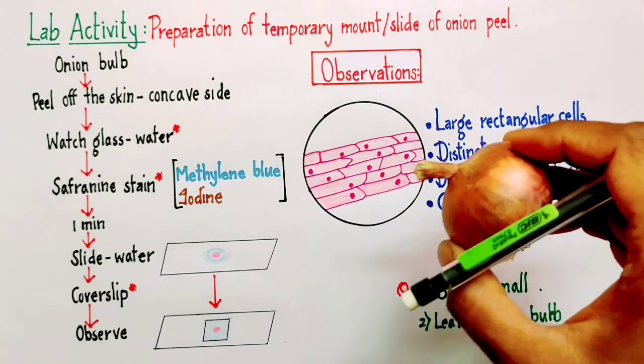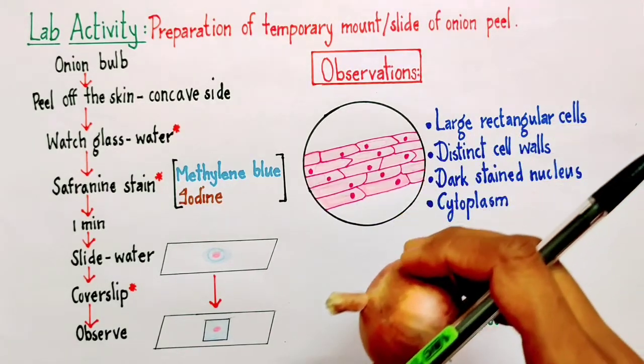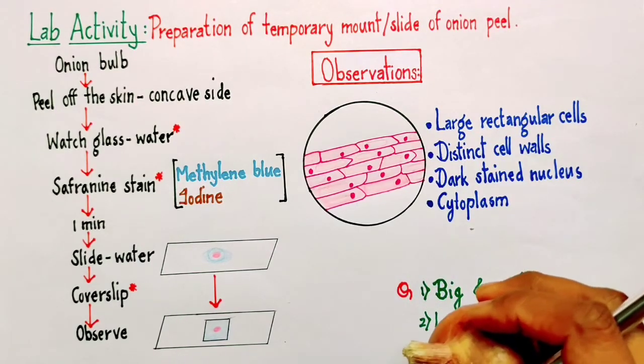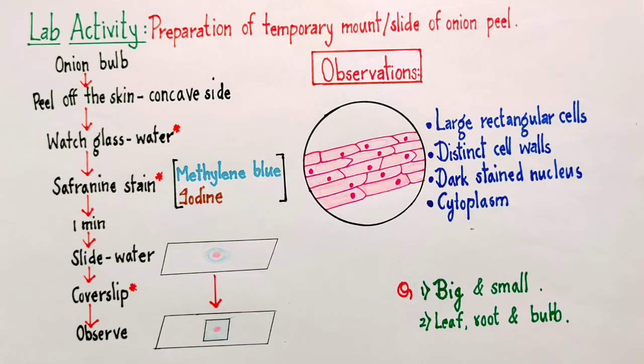So it will be a waste. If I have to study onion cells, I need to prepare the temporary slide. So what is the procedure?